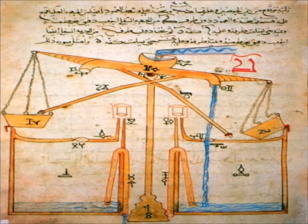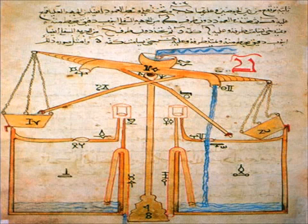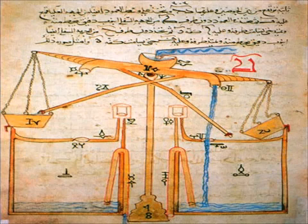In the Model of the Motions, Ibn al-Haytham also describes an early version of Occam's razor, where he employs only minimal hypotheses regarding the properties that characterize astronomical motions, as he attempts to eliminate from his planetary model the cosmological hypotheses that cannot be observed from Earth.